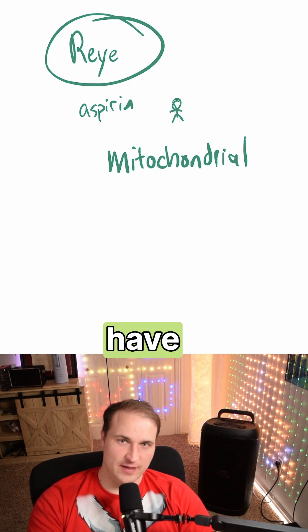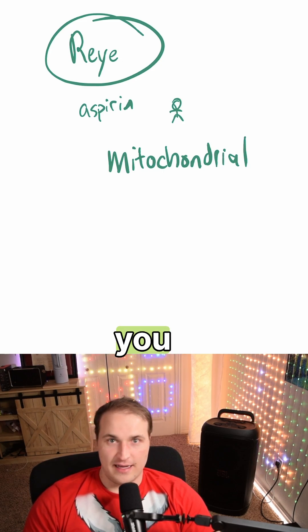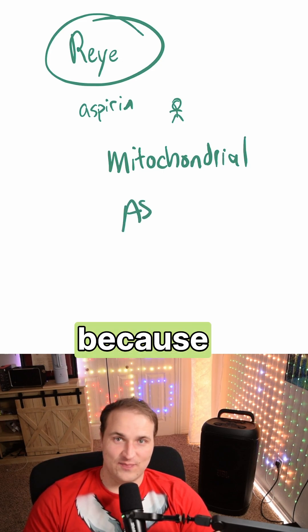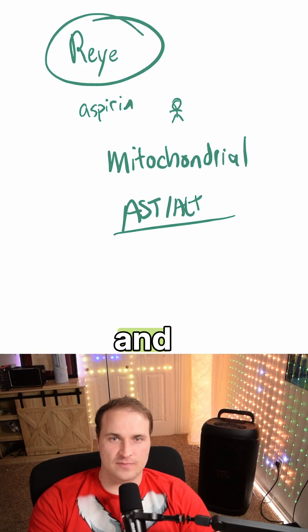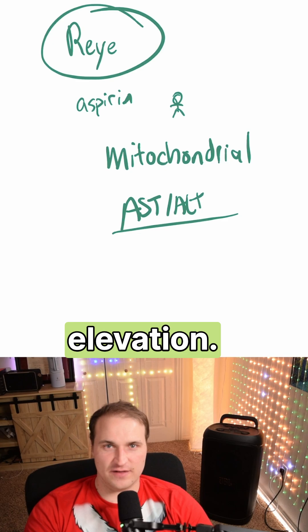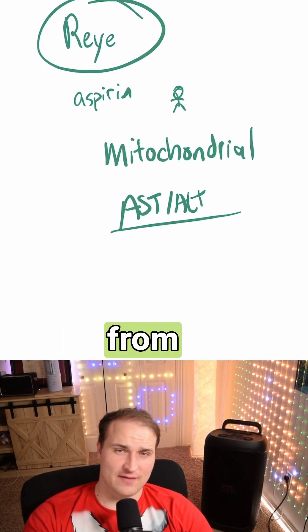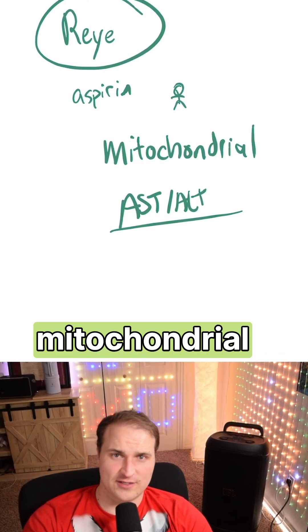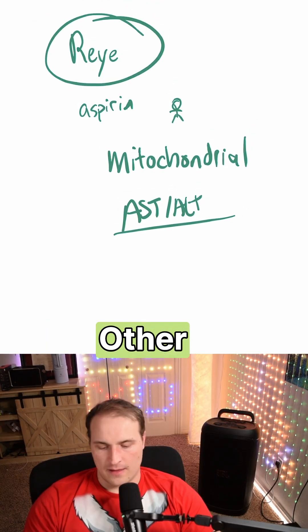In Reye's syndrome you have massive hepatocellular injury, and you can tell this because the labs are going to have AST and ALT in the thousands. You're not really going to have tons of bilirubin elevation, and the liver failure is going to come from mitochondrial dysfunction, not cholestasis.